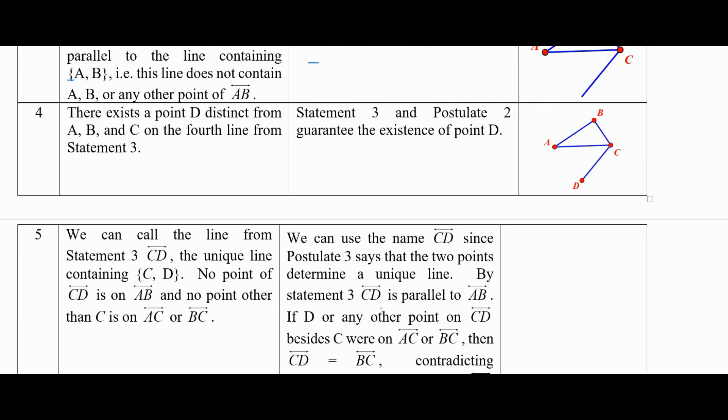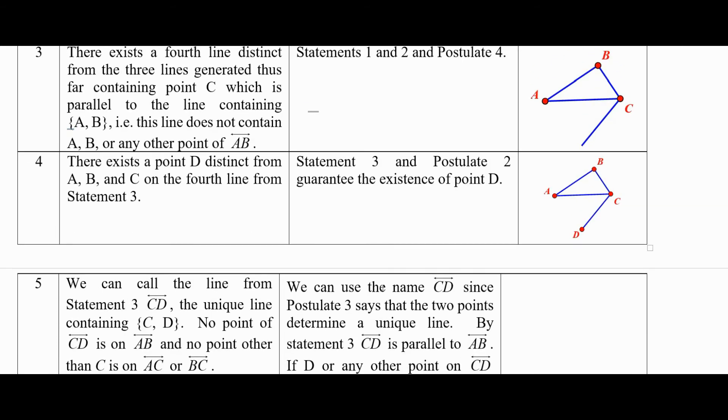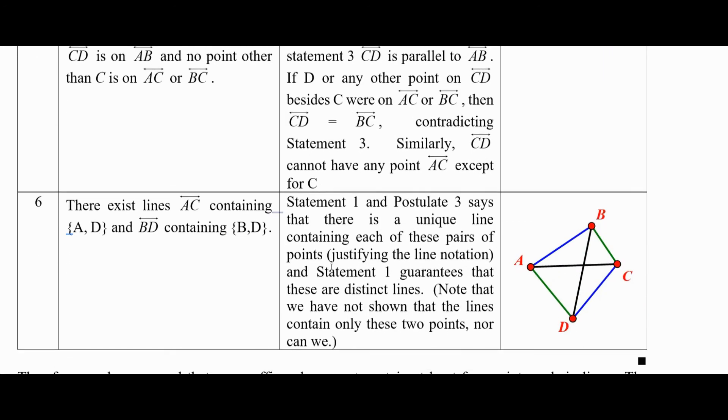We call the line from statement three line CD because it's the unique line containing C and D. Notice that no point of line CD is on AB and no point other than C is on line AC or BC. Lines have to intersect in just one point if they're distinct lines and they do intersect, but we could have some parallel lines like we do here. No intersection points other than the ones we've got noted here.